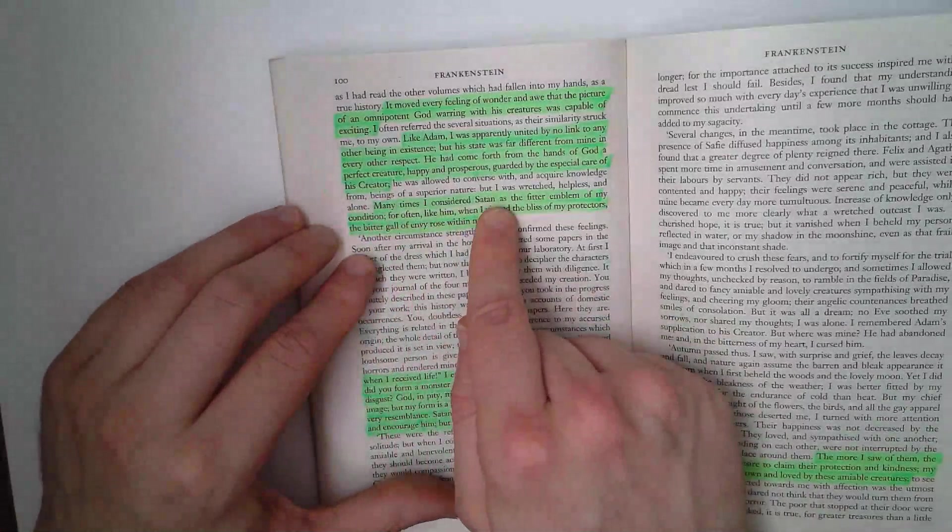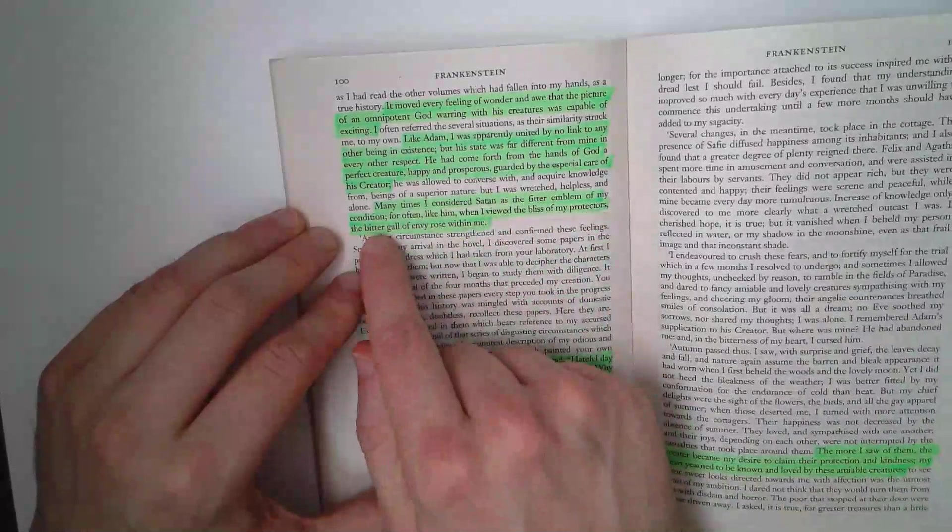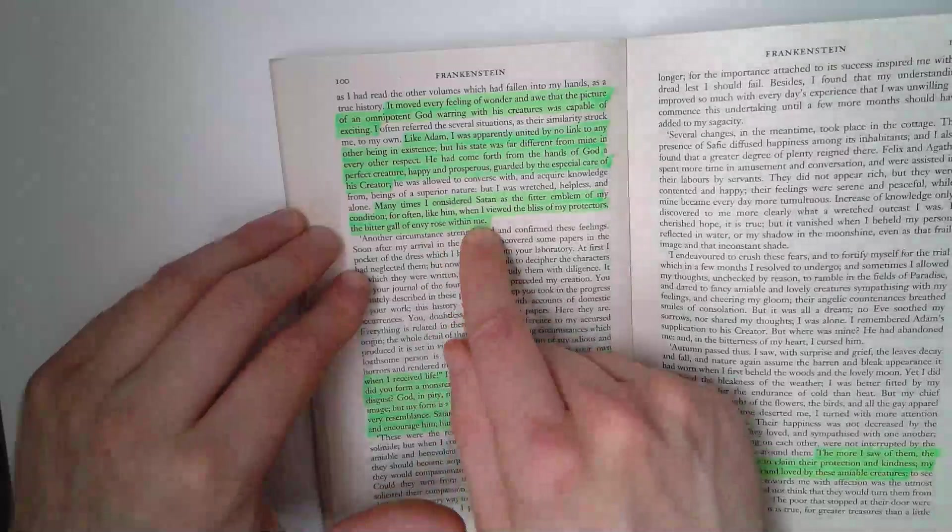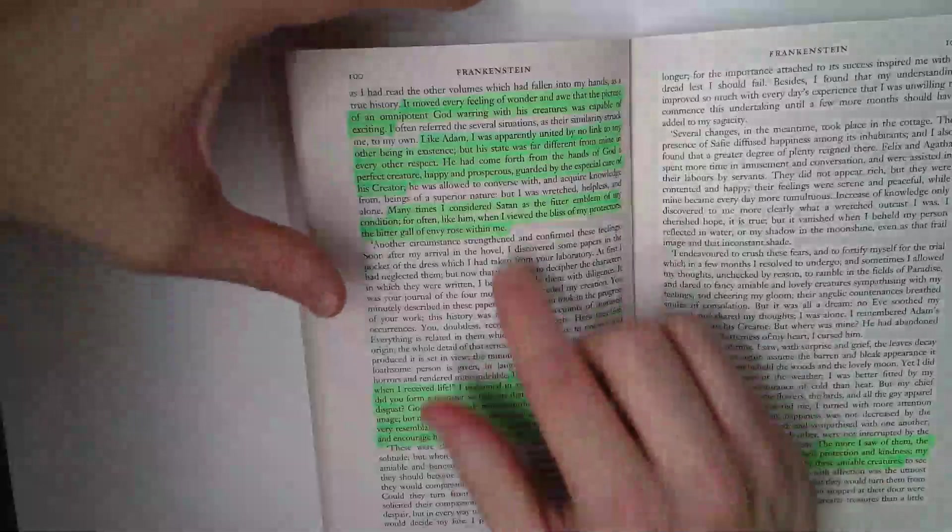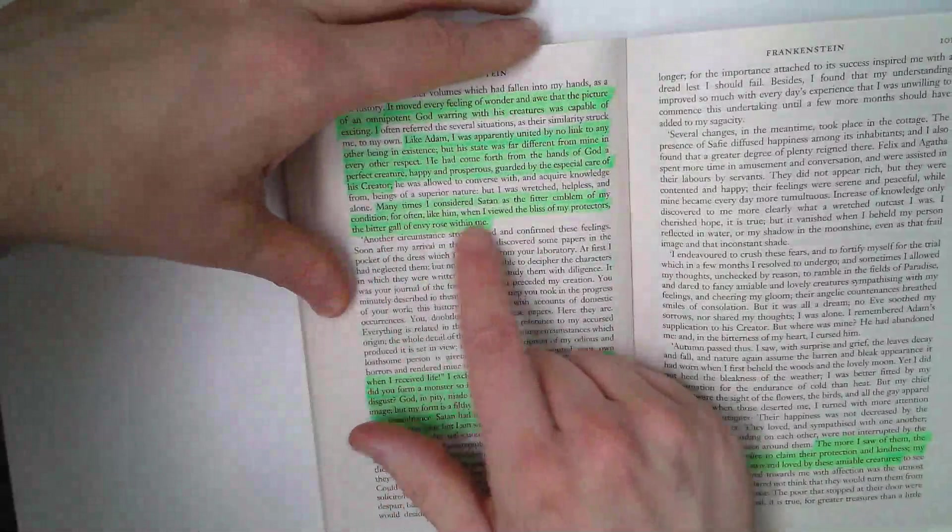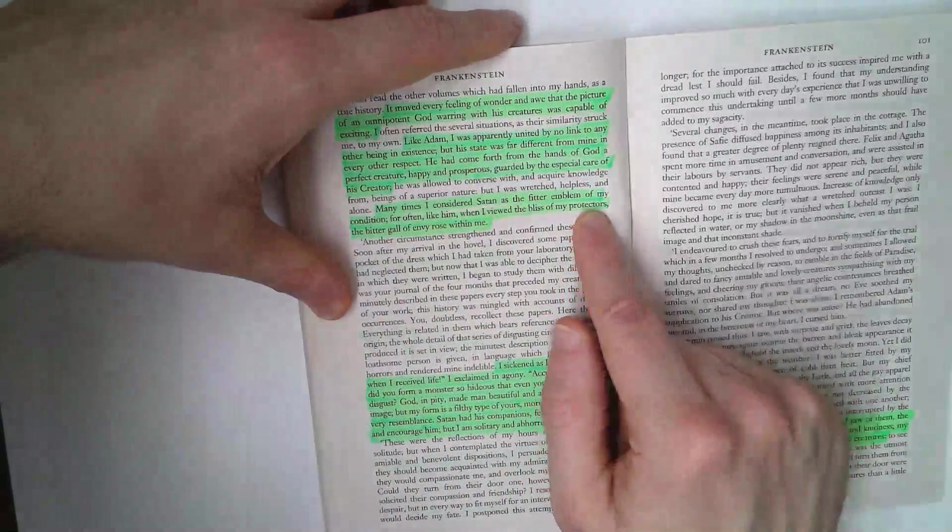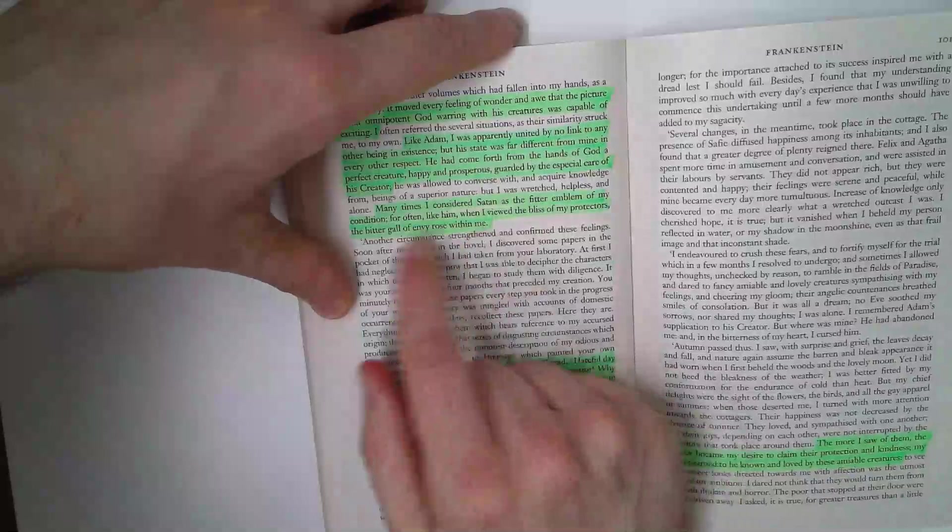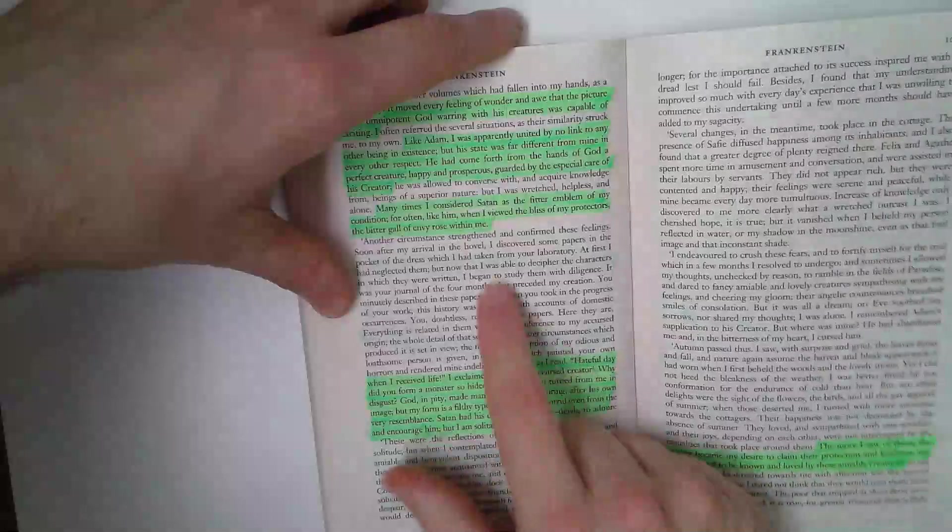But the creature sees himself as Satan, the fitter emblem of my condition. For often, like him, when I viewed the bliss of my protectors, the bitter gall of envy rose within me. Satan's envy for God's powers and desire to commit evil. And the bliss of my protectors, and the creature starts to realize here that he's different to the DeLacys. And he's envious of them as well, and there's that bitter gall.